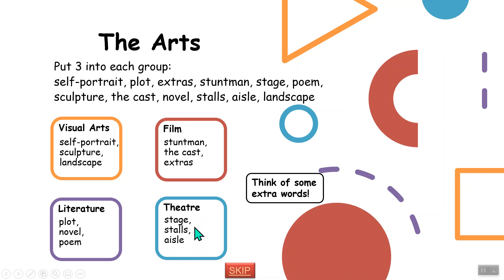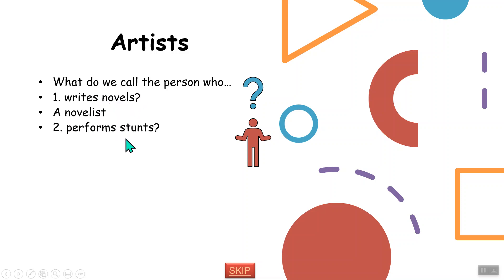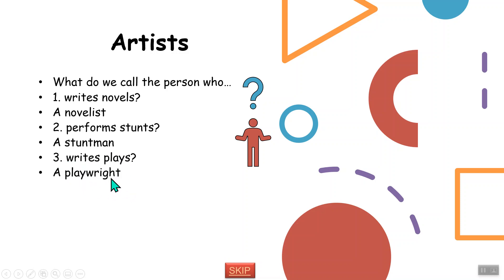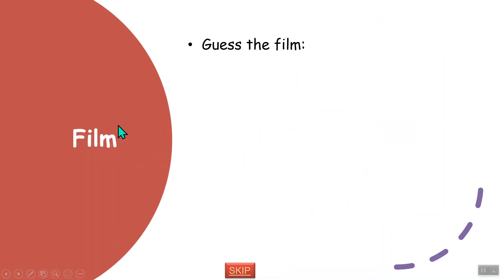For theater, you could add the curtain. Now, what do we call the person who writes novels? The root word is 'novel' — a novelist. Who performs stunts? A stuntman, or stuntwoman. Who writes plays? A playwright — note the spelling: W-R-I-G-H-T. Shakespeare was a famous playwright. Who draws cartoons? A cartoonist. Who plays music? A musician.